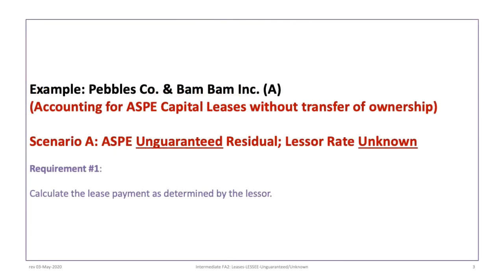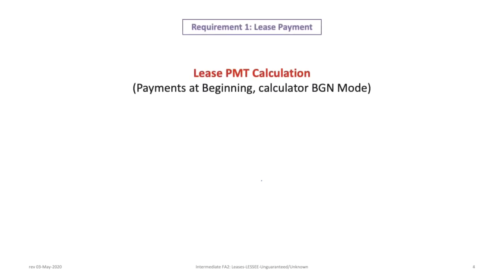This video is based on the Pebbles Company and BamBam Inc. example, where Pebbles, the lessee, reports under ASPE, in a scenario where the residual is unguaranteed and the lessor's implicit interest rate is unknown. The first requirement is to calculate the lease payment as determined by the lessor. Because lease payments are made at the beginning of each period, make sure your calculator is in BGN mode. Remember, the lease payment is always determined by the lessor.